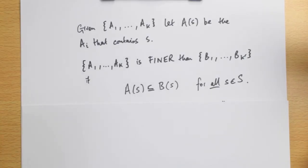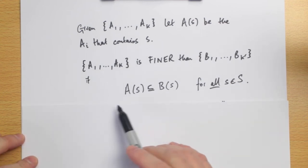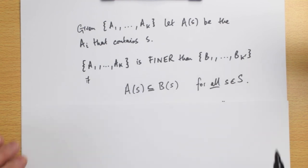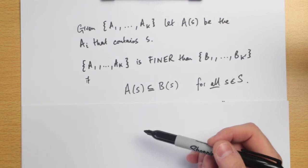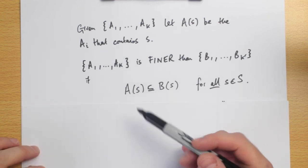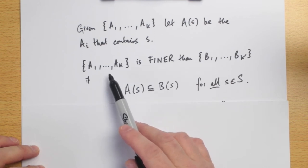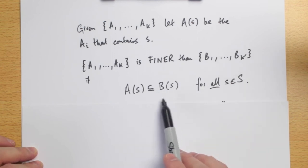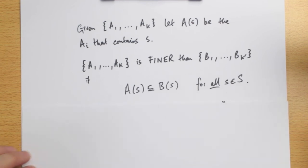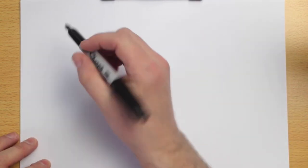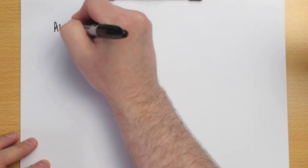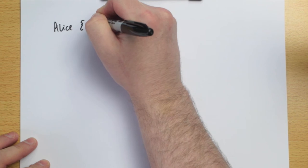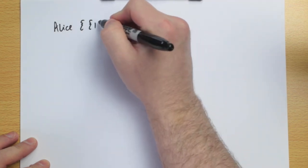Let's prove that there is asymmetric information between Alice and Bob. To show asymmetric information, we need to show that one individual has better information than the other — meaning one information structure is finer than the other. This means confirming that A(S) is a subset of B(S) for all states S. Let's actually do this; it's quite mechanical. Let's write out Alice's information structure.